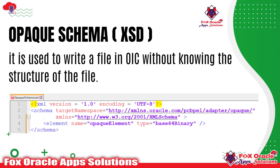Whenever we say 'schema', it means the structure of a file — we define what kind of file we are going to receive, how many columns are there, and everything else. But there are some situations where we don't know the file structure; we are not aware about the file, whether it is a CSV file, text file, or any other format.